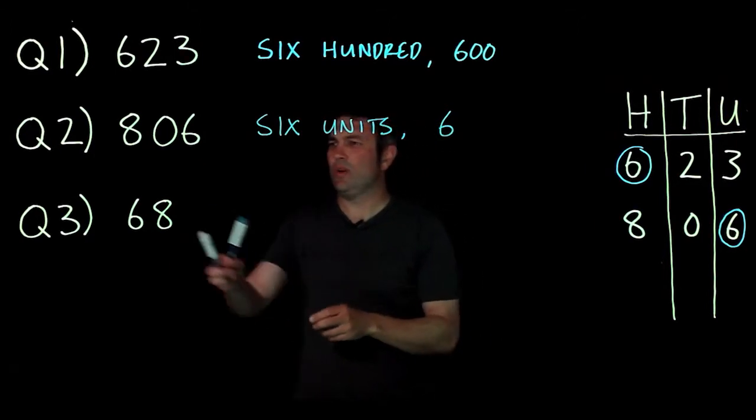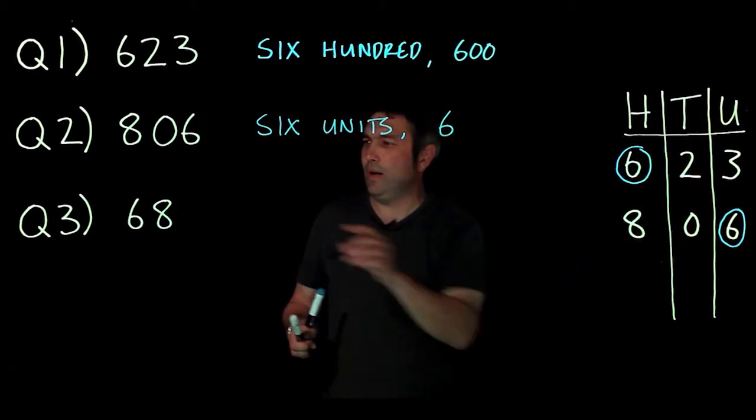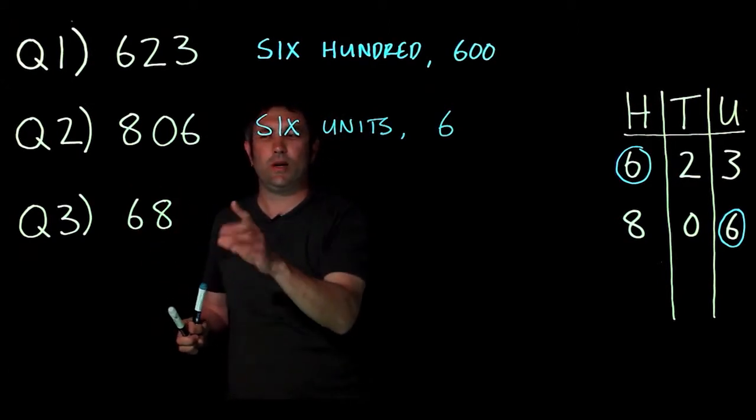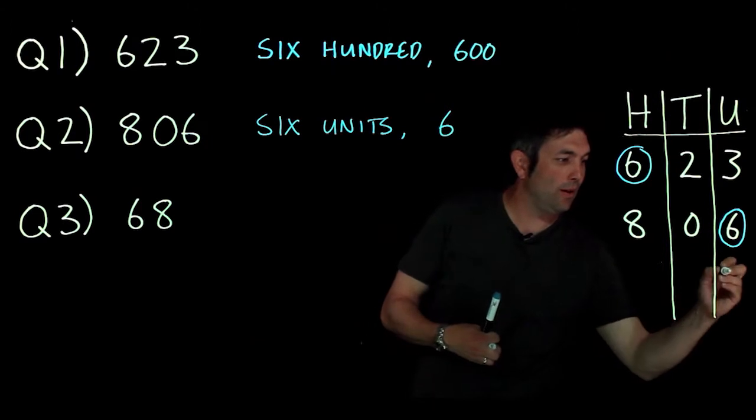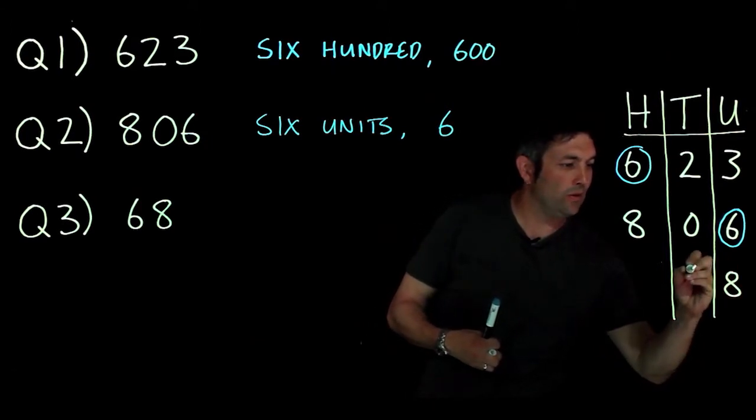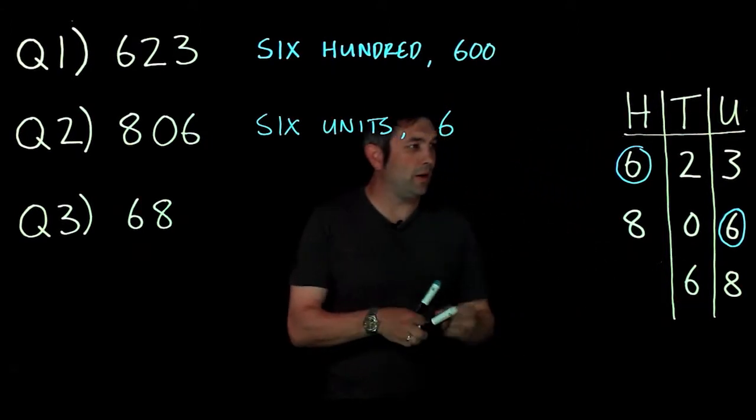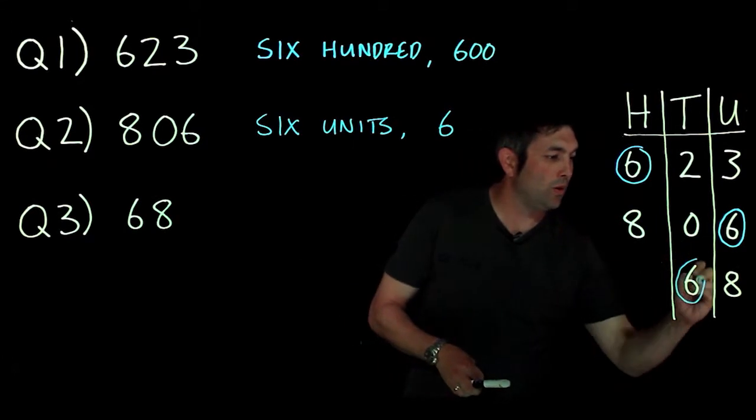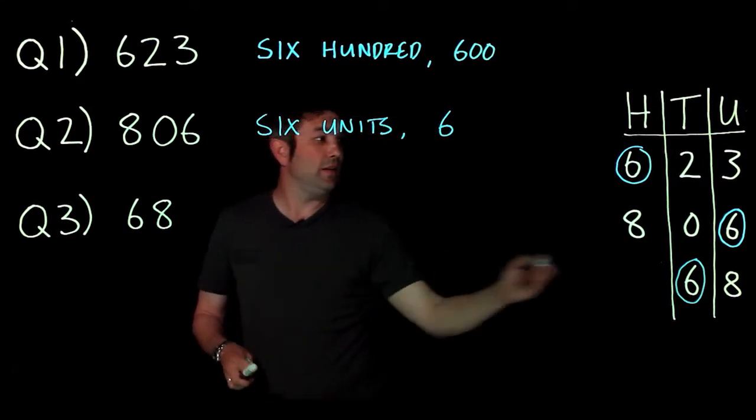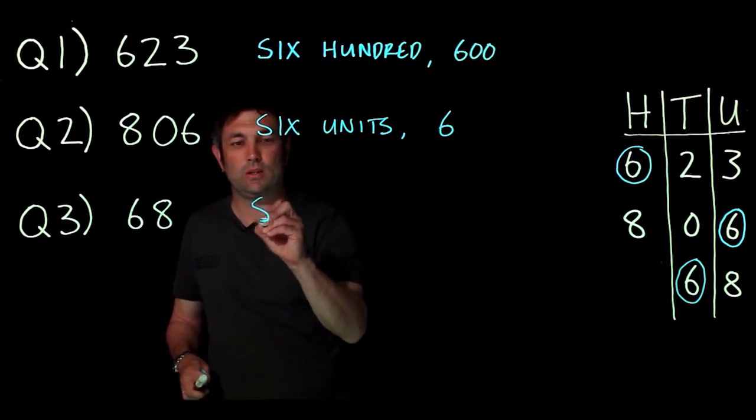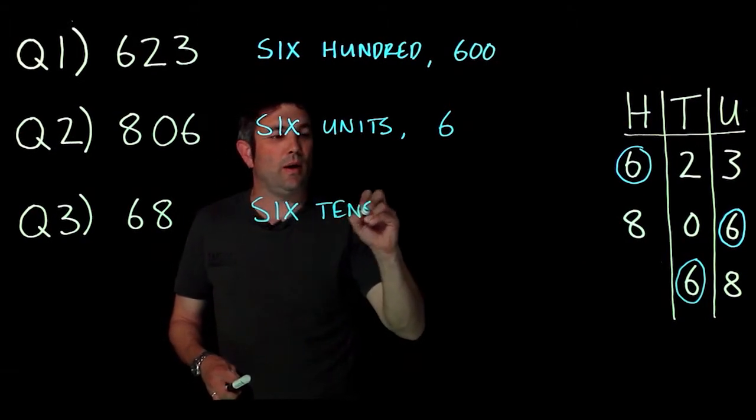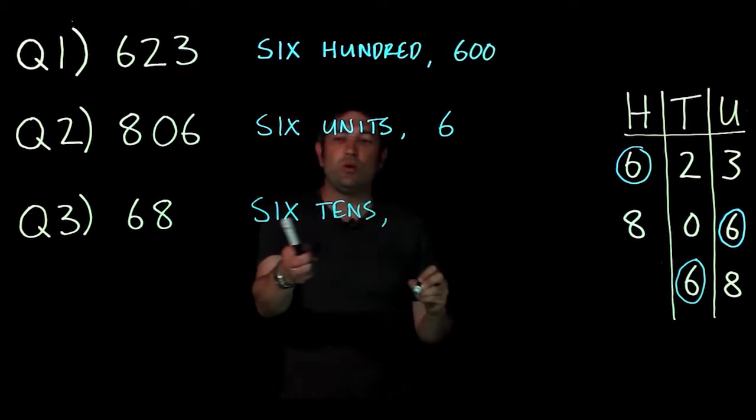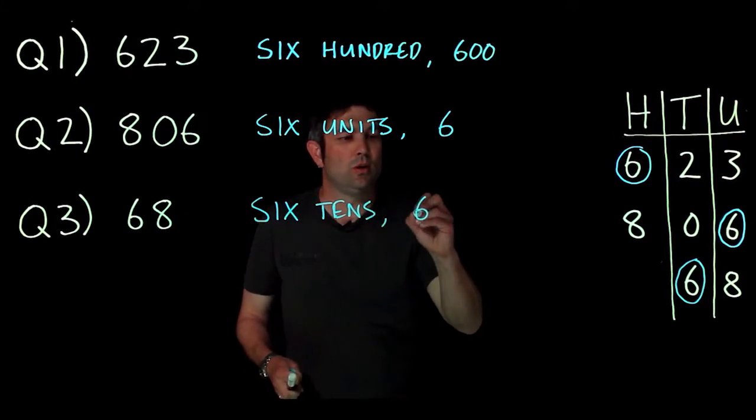And then the last one's a little bit trickier because we've got three columns in our table here but we've only got two numbers. Now you've got to go from right to left, so I'm going to write that as eight and then six. I'm going to circle the six once more, that's the one I'm looking for, and that is in the tens column, so I'm going to write six tens. Now once again, in the exam we wouldn't use six tens, we'd use sixty.